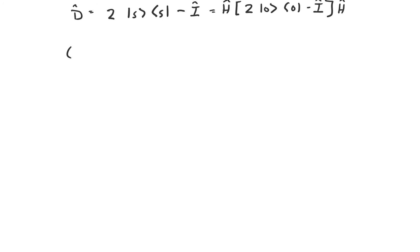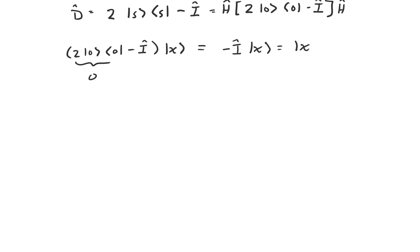Let's consider what the reflection about |0⟩ does to each of the vectors in the computational basis. If the vector isn't equal to |0⟩, then the inner product with |0⟩ gives the scalar zero, and we just end up with the negative identity operator acting on the vector — so we get a negative sign in front of the basis vector. If the vector is |0⟩, then the reflection about |0⟩ just gives |0⟩ back again. So acting on |0⟩ we do nothing, and acting on any other basis vector we put a negative sign in front.